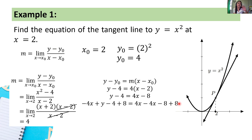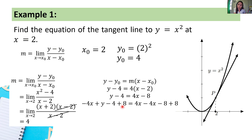Whatever we did on the right-hand side we also do on the left-hand side. That's why we got negative 4x and plus 8 on the left — originally it was just y minus 4. Let's simplify further: negative 4x + y, and negative 4 + 8 = 4.